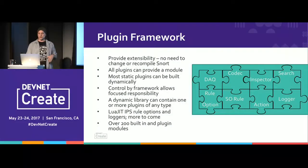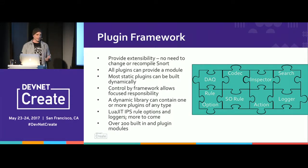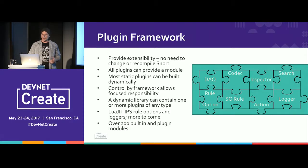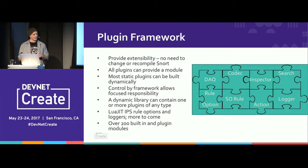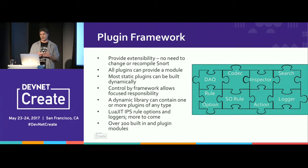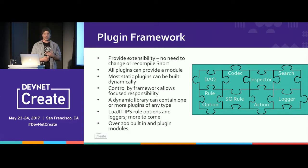There's a plug-in framework with several types of plug-ins: codecs for encoding and decoding packets, inspectors for things like HTTP, the fast pattern search engine, and so on. Plug-ins have a very specific purpose. To implement one, you define an API struct that allows the framework to instantiate a subclass of the base class for that plug-in, and you define a module that glues it to the framework — defining parameters, peg counts, and performance metrics access.